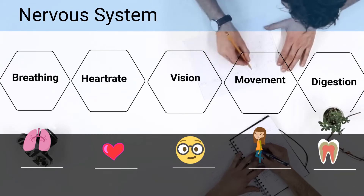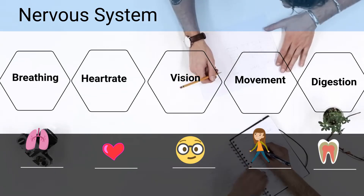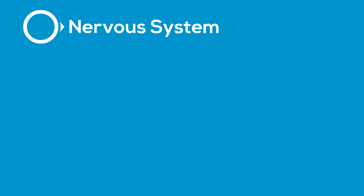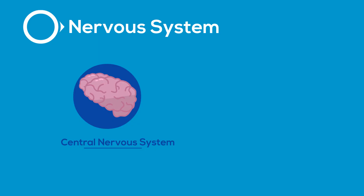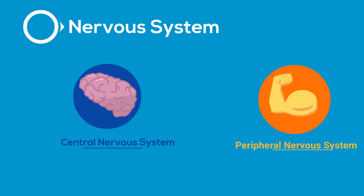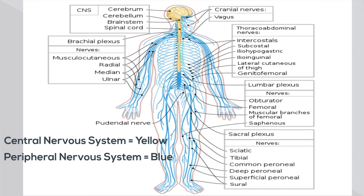The nervous system can be divided into two main groups: the central nervous system and the peripheral nervous system. The central nervous system contains your brain and spinal cord, and the peripheral system are the nerves that extend throughout the body. Check out each system in the following picture.